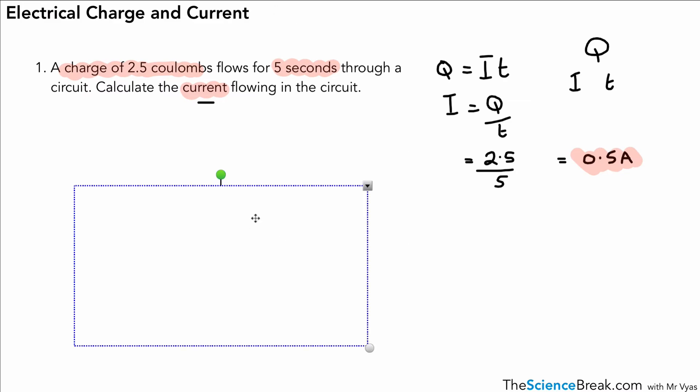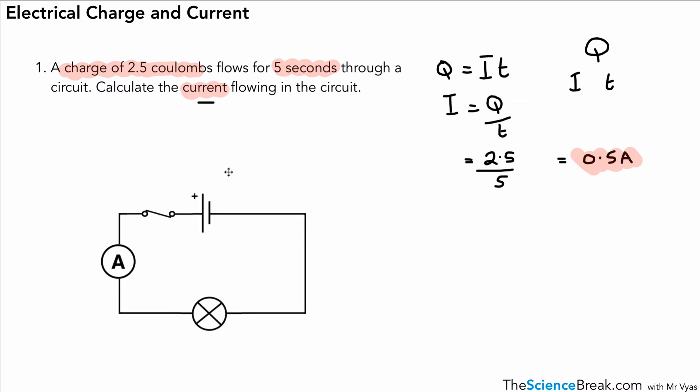This next question is actually also very straightforward. There's a diagram for it, but it's actually a bit more straightforward than the one above. I'm sure you can pause here and have a go for yourself. But if not, we've got an ammeter with a reading of 3.2 amps and a time of 4 seconds.